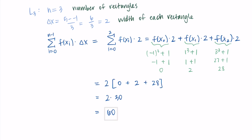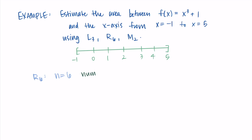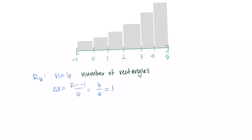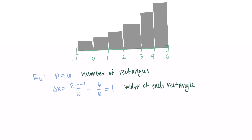Now we'll do the right Riemann sum with six rectangles — R6. Here n = 6 and Δx = (b - a)/n = (5 - (-1))/6 = 6/6 = 1. This makes sense: to fit six rectangles across the interval, each needs a width of 1. I'll label the endpoints: x₀, x₁, x₂, x₃, x₄, x₅, and x₆.